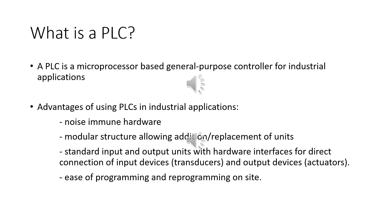The main advantage of using PLCs is that they have standard input-output units with hardware interfaces for direct connection of input devices, which are normally the process transducers, and output devices, which are the process actuators. This connection does not require any additional hardware by the control engineer, as long as the input and output units were chosen correctly according to the requirements of the process.